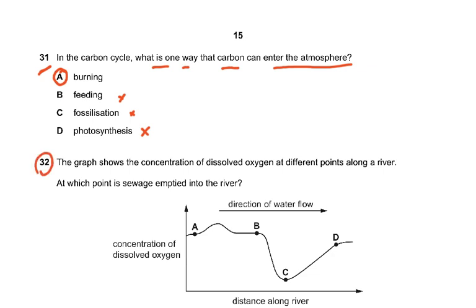Burning - yes. Three processes which produce carbon dioxide: respiration, combustion and decomposition. Question 32: The graph shows the concentration of dissolved oxygen at different points along the river. At which point is sewage emptied into the river? This has come in the previous variant as well. The answer is B.